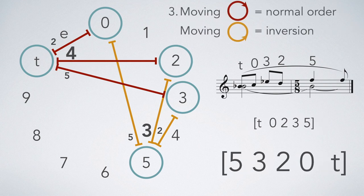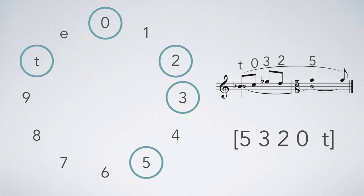Any time we move clockwise around the circle, we are choosing normal order. And any time we move counterclockwise, we are choosing the inversion of the normal order. Now, all that's left is to transpose to zero.